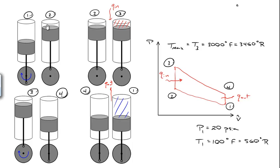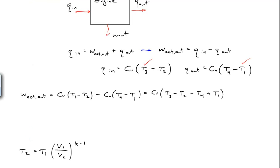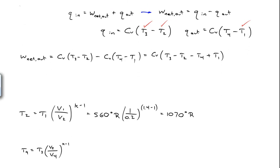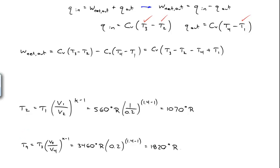We don't know the temperature at point two or at state four. However, since the process from one to two is isentropic compression, we can use the isentropic relation to calculate T2 from T1. Similarly, the expansion from three to four is isentropic, so we can calculate T4 from T3. Setting delta S equal to zero and using the ideal gas relation, plugging in numbers gives T2 equal to 1070 Rankine. Similarly, solving for T4 gives a temperature of 1820 Rankine.